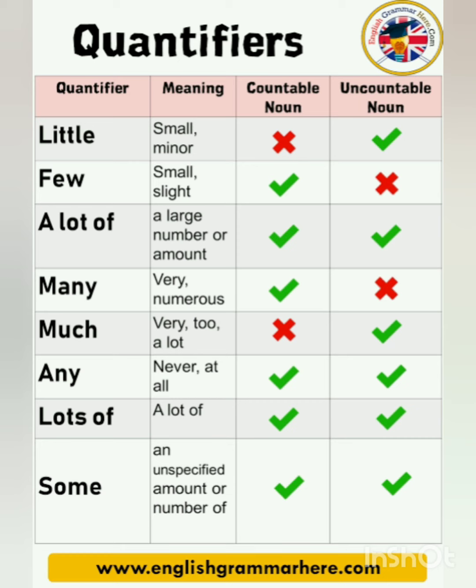Some quantifiers are: little, a lot of, much, any, lots of, some, a few, and many others. Quantifiers like little, a lot of, much, any, lots of, and some are used with uncountable nouns — nouns we cannot count, like the stars, the leaves on a tree, or grains of sand.